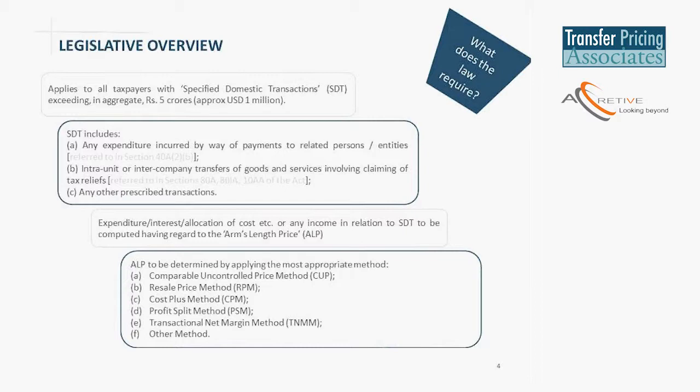The first method is the comparable uncontrolled price method, which really looks at the price comparison of a transaction. Finding external data on comparable prices is very difficult, and this method is commonly adopted where the unit has internal comparables. The second method is the resale price method, which is typically used in distributor scenarios. In my experience, this method would be less commonly adopted for domestic transfer pricing transactions.